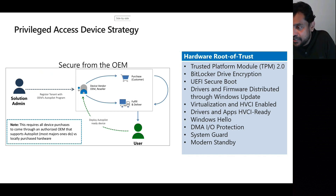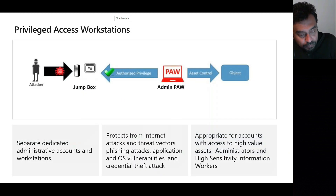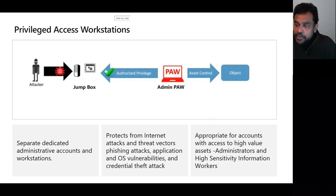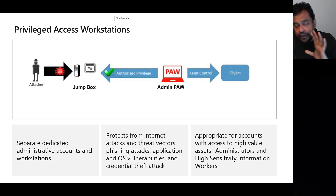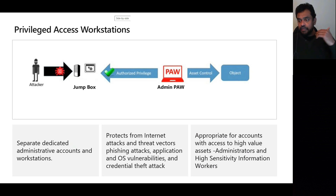These security features help increase the protection of the Privileged Access Workstation. By accessing a jump box through the PAW to perform administrative tasks, we can ensure our endpoints are properly protected.